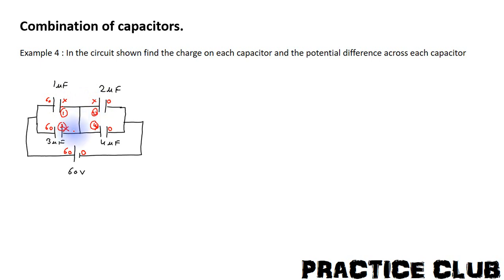The net charge on these four plates we can say to be equal to 0 in this case. So the first plate will have charge (x minus 60) times the potential difference into its capacitance. The second plate will have charge (x minus 0) into its capacitance.